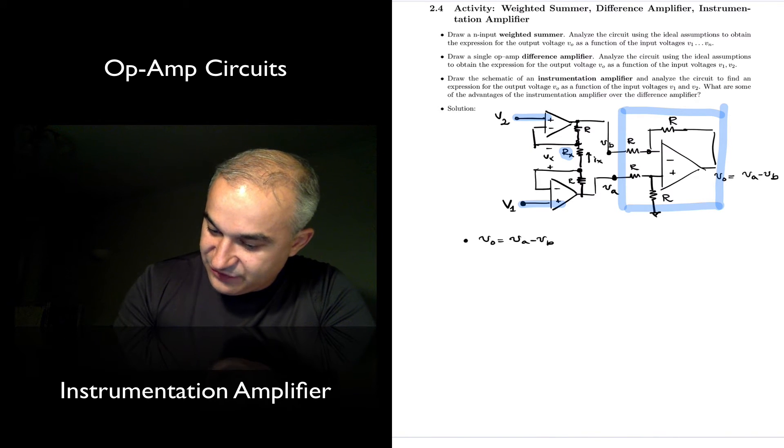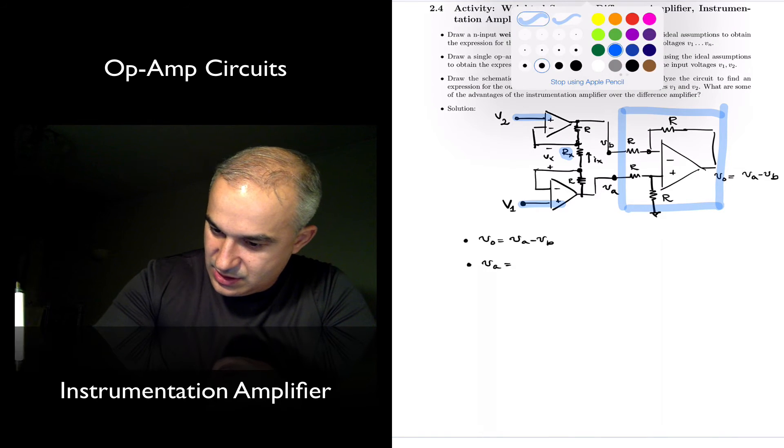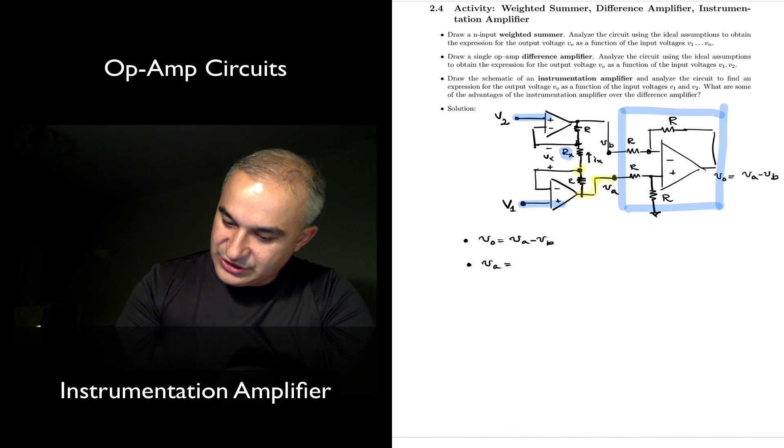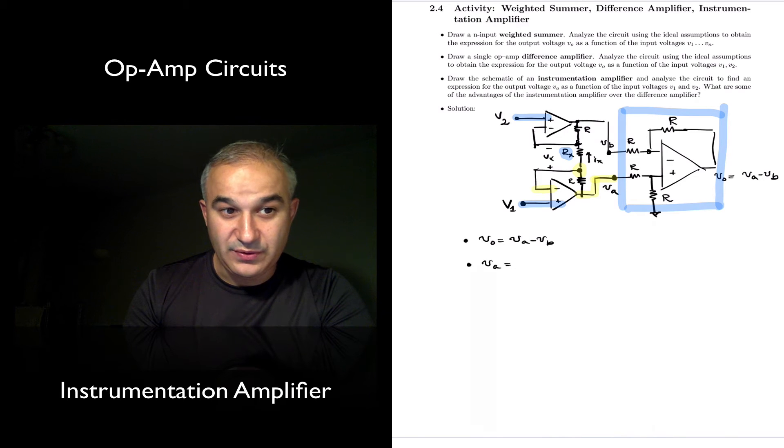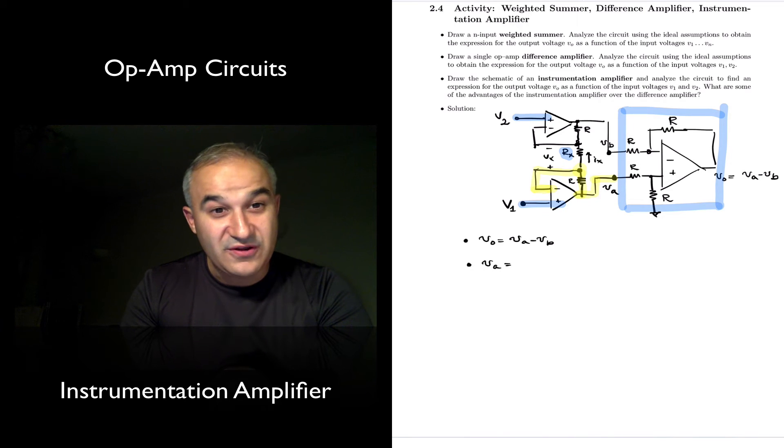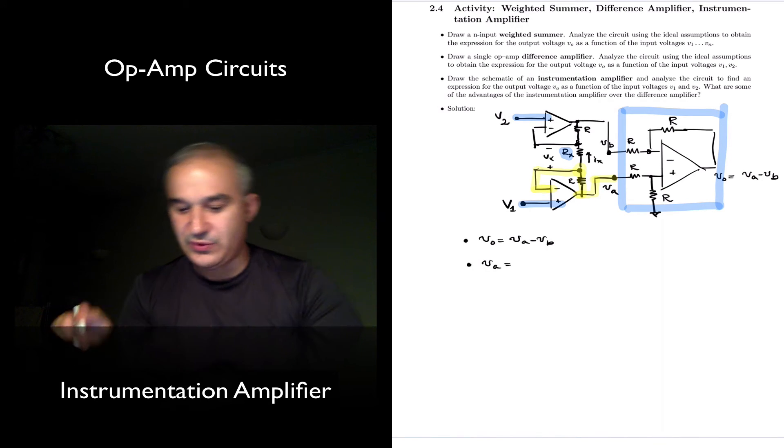So what we need to do now is to figure out what is the voltage here and the voltage there. So what is Va equal to? Va is the voltage right here in this node. We know at least what the voltage is here, right? That's V1, because we have negative feedback. So if we have a path from the output back to the non-inverting input, the inverting input is going to be equal to the non-inverting input, meaning the output of the operational amplifier is going to modify the output in such a way that that happens, right?